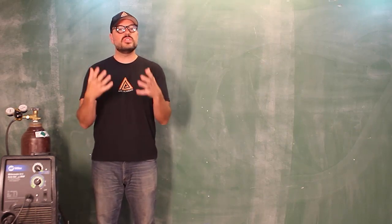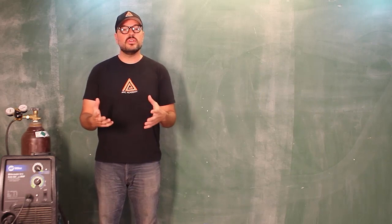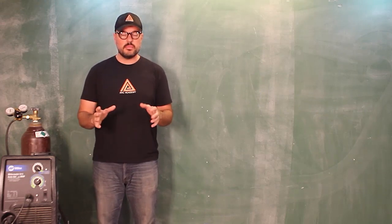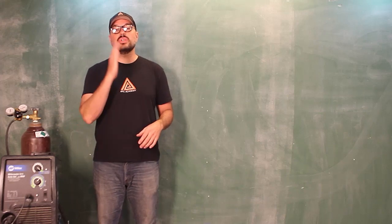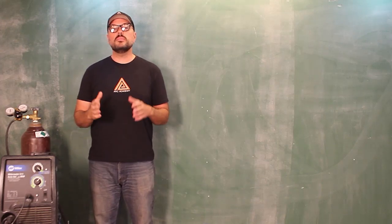For downhill welding, there are rules to the game. Anytime you're going into any angle of weld, you want to split that in half—that's your work angle.